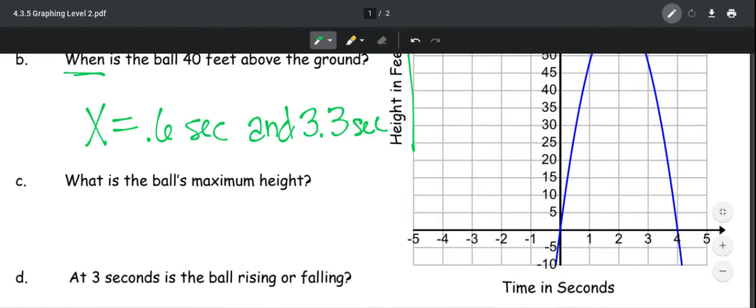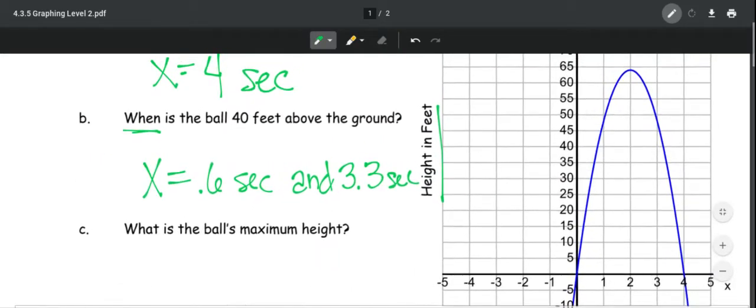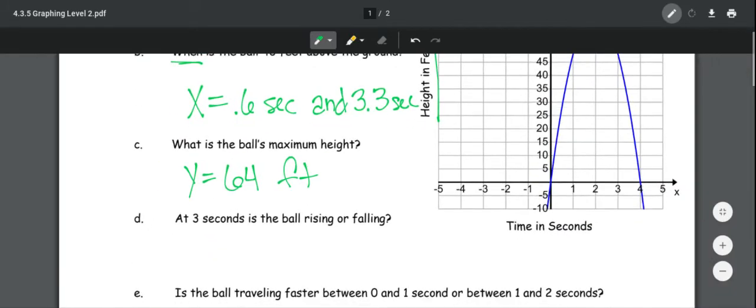What is the ball's maximum height? So maximum height, you look here. So ball's maximum height. We were looking at, this is not quite at 65. So maybe 64, maybe 63. I'll go 64 feet. When you're just estimating on the graph, as long as it's close, that's fine.